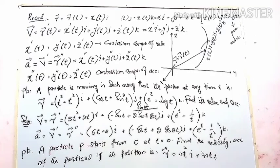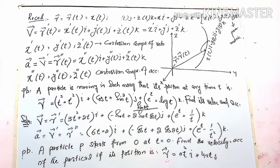Another problem: particle P starts from origin O at t equal to 0. Find the velocity and acceleration of the particle if its position is given by r equal to a t squared i plus 4a t j, where a is a constant. The goal is to find the velocity and acceleration from this position vector.